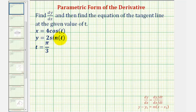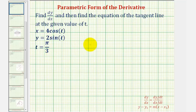Given the parametric equations of a plane curve and t equals pi over three, we want to find dy/dx and then find the equation of the tangent line at the given value of t. Because our ultimate goal is to find the equation of the tangent line, we'll need to find the point of tangency at t equals pi over three, as well as the slope of the tangent line, which we can find by evaluating dy/dx at t equals pi over three. Let's start by finding the point of tangency by substituting pi over three into our parametric equations.